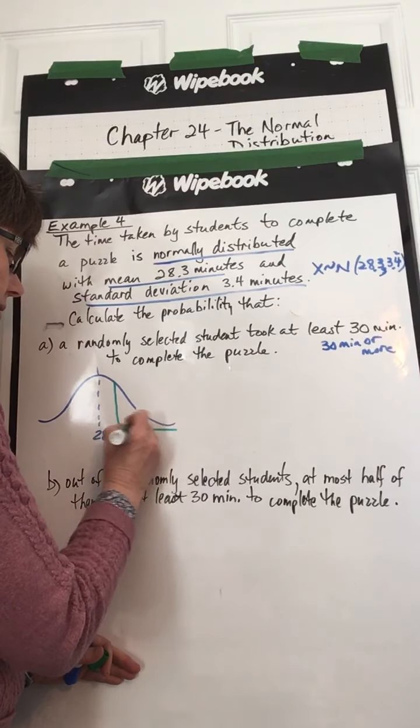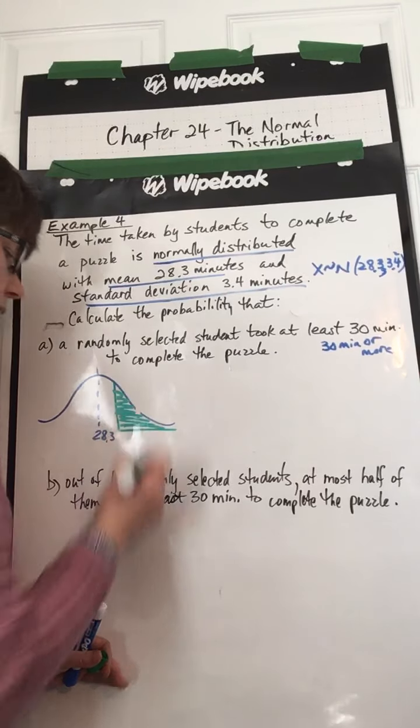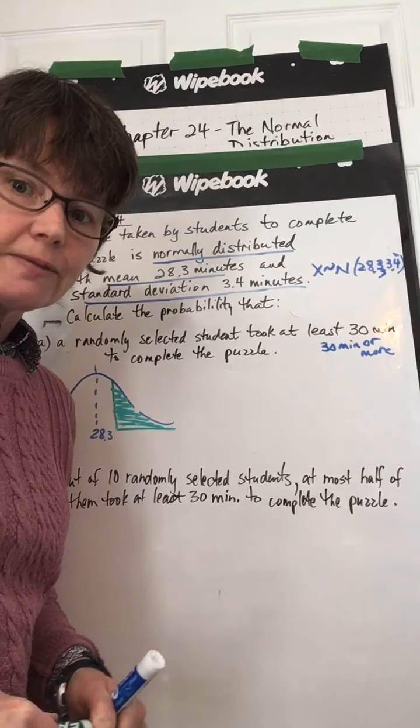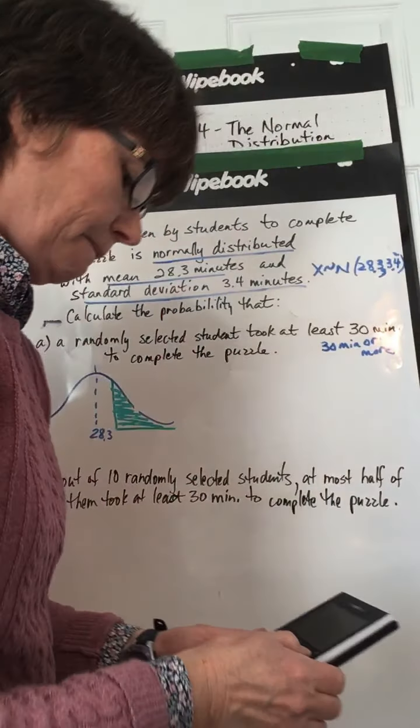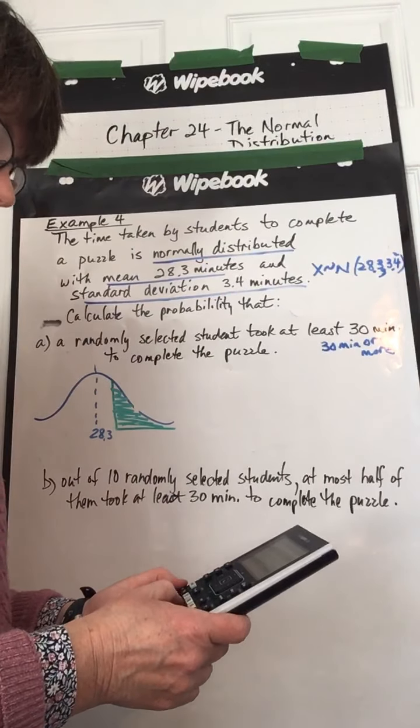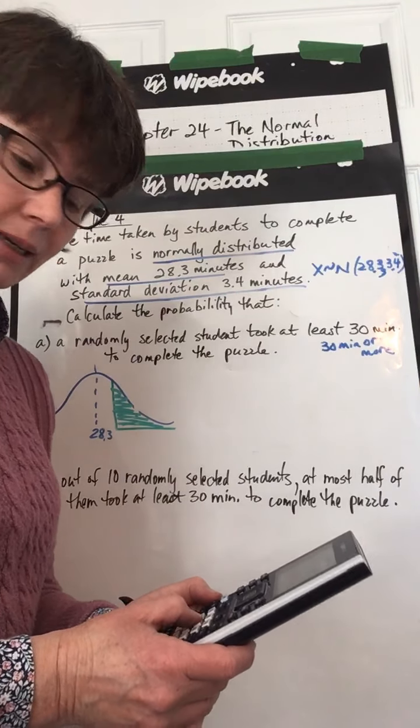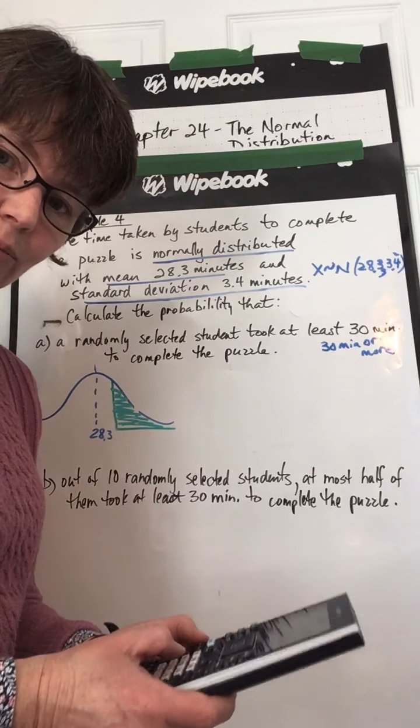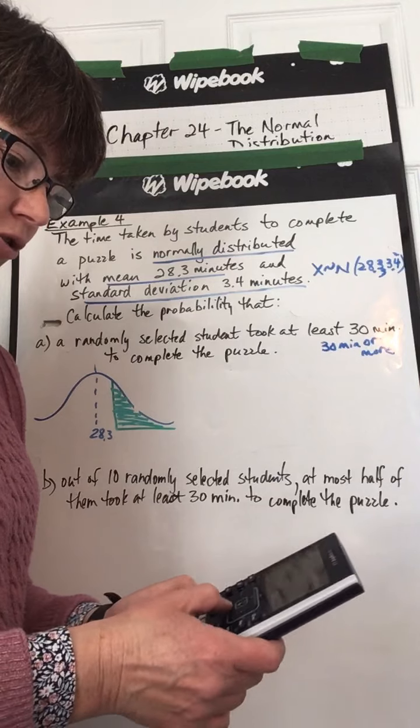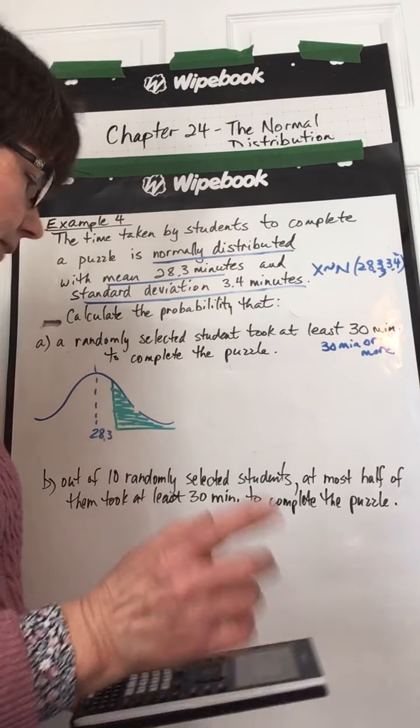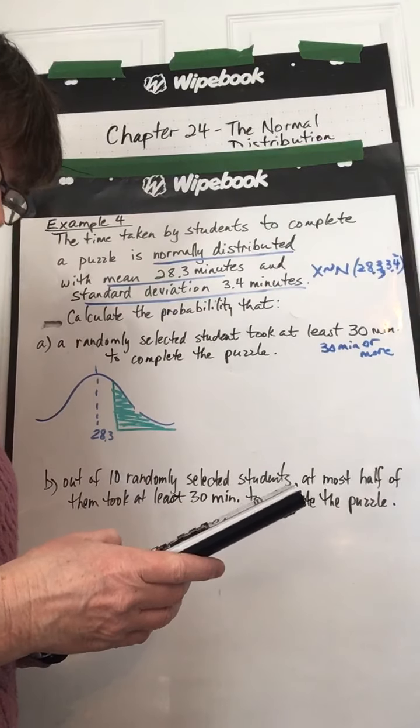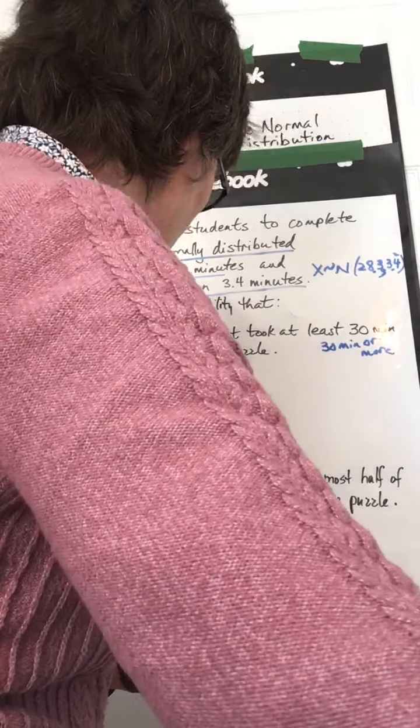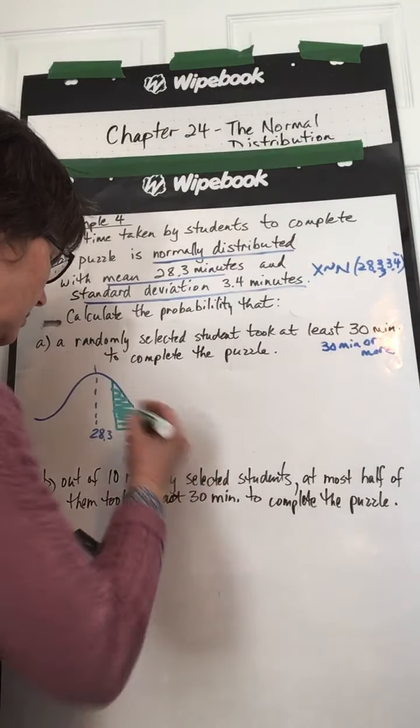So we're looking for this area, so we know at least that it should be smaller than 50%. All right, so here we go, calculator, TI-inspire, menu, probability, distributions, normal CDF. Our lower bound is 30. I could even write a 30 in there, I guess. Let's see here, 30.